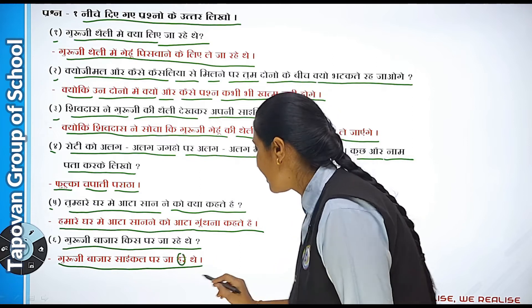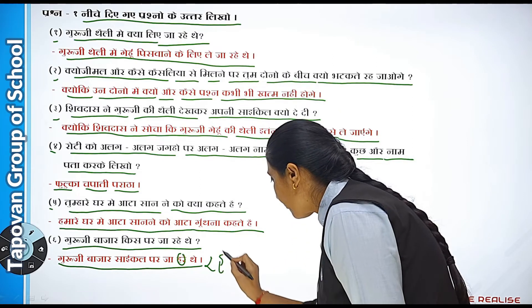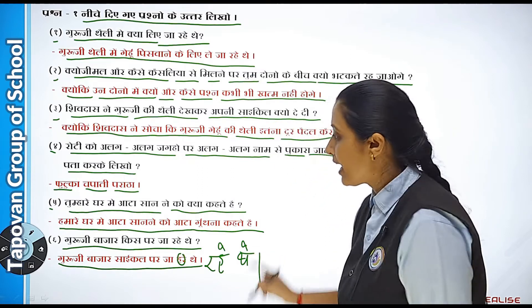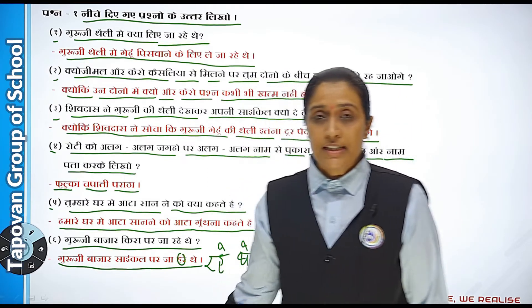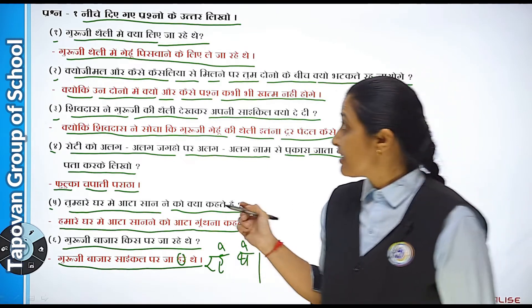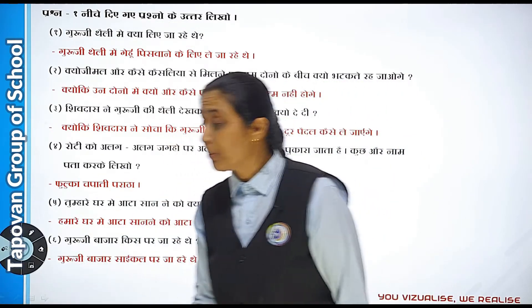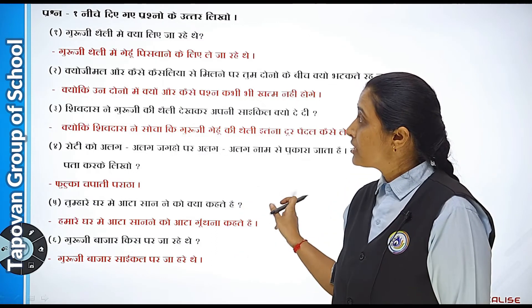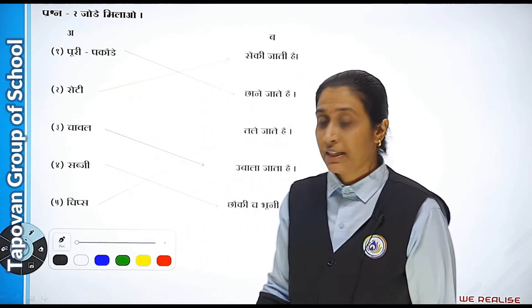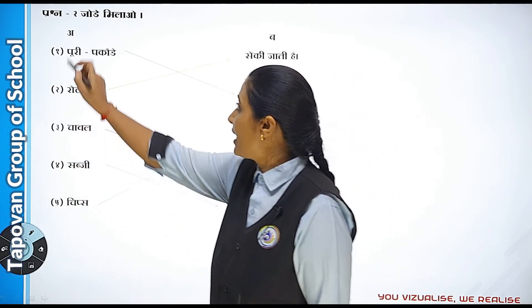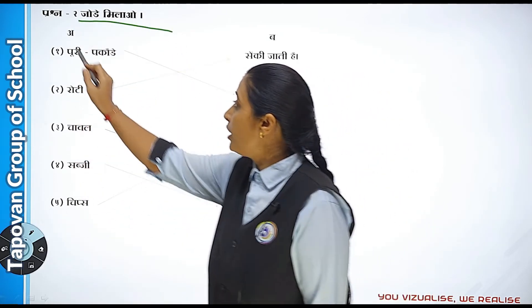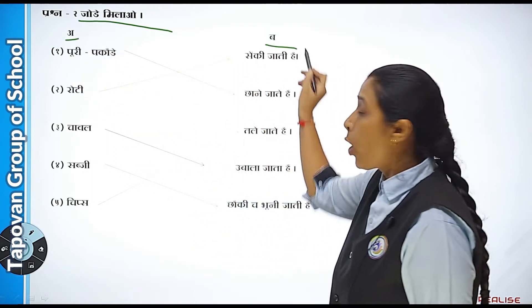Yahaan likhna hai 'ja rahe the' — yahaan 'ja rahe the' likhna hai. Yahaan dono part hain: A aur B, yahaan likhna hai.